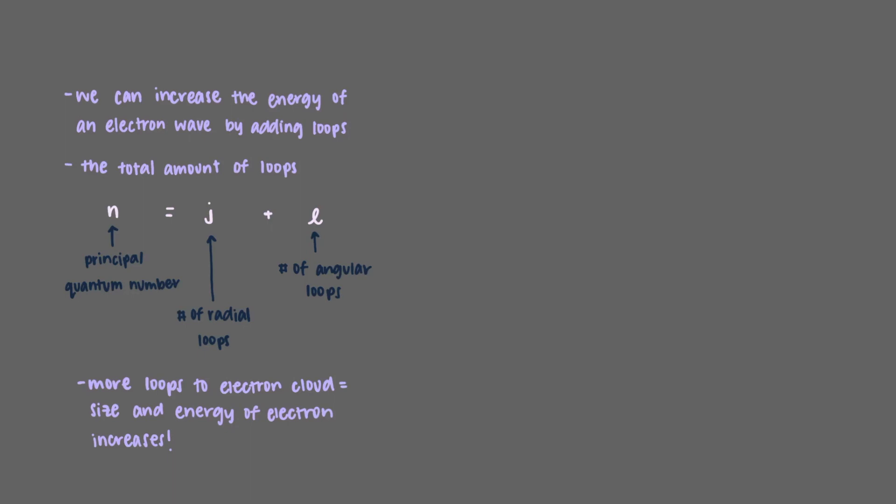This is described by the Bohr model equation. E sub n is the energy of the electron wave, z is the nuclear charge of the atom, and n is the principal quantum number. Note that this equation only works for atoms that have a single electron.